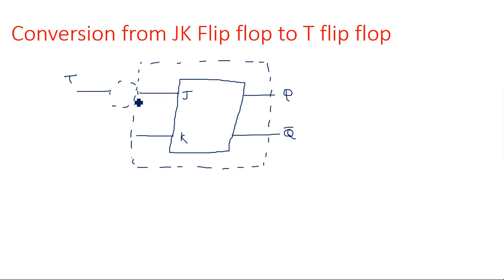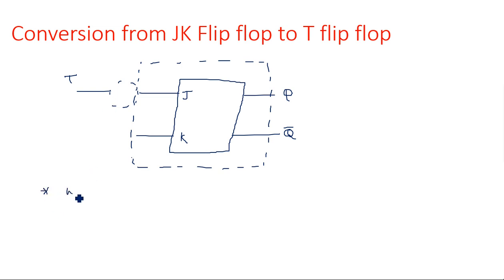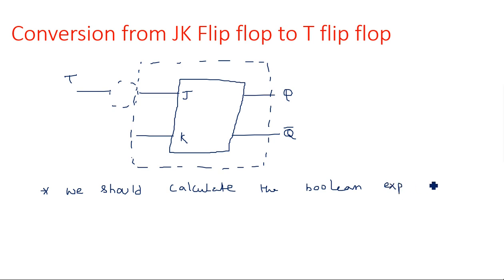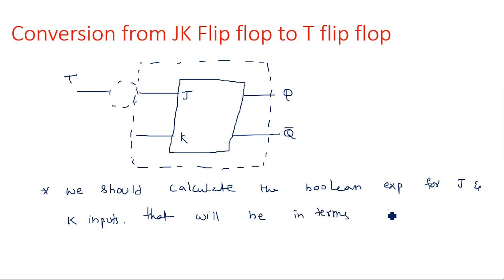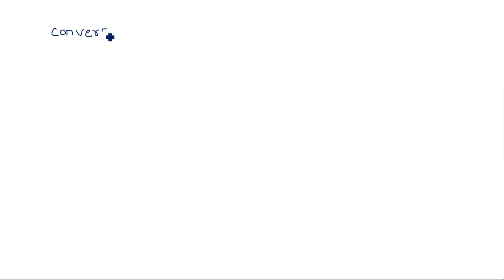For any conversion, first we need to calculate the Boolean equations. Here we should calculate the Boolean expression for J and K inputs — and those will be expressed in terms of T. That's why we have to consider the table in such a way that T is one of the inputs.